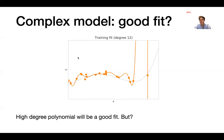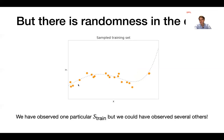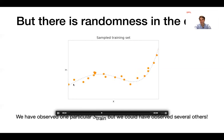On the other hand, if we consider a very complex model — for example, a high-degree polynomial of degree 12 — we obtain a model that fits the training data very well, with training loss almost equal to zero. But we can directly see that this model is overfitting: the prediction does not seem close to the true underlying function. Why is this? Because there is randomness in the data.